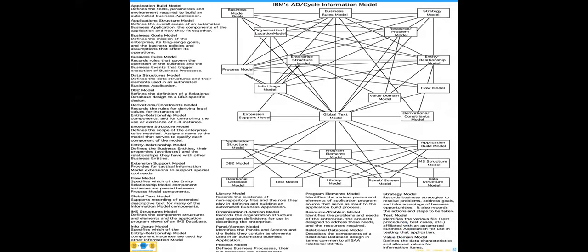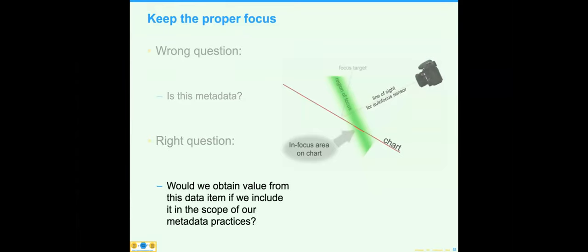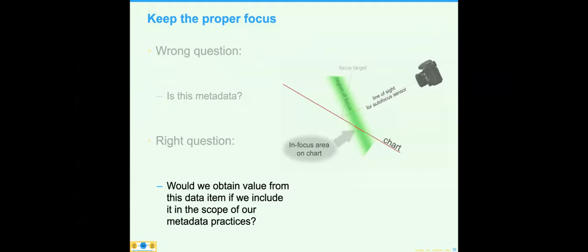Metadata is so important that IBM came up with something called AD Cycle — Application Development Cycle — listing all the various types of metadata that can exist. It's a great place to study metadata. But the real question is not 'is this metadata?' but rather 'would we obtain value from this data if we include it within the scope of our metadata practices?'